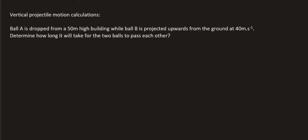So what we have is ball A which is dropped from a 50 meter high building while ball B is projected upwards from the ground at 40 meters per second. Now we will assume that takes place at the same time. I should have added that in. Determine how long it will take for the two balls to pass each other.